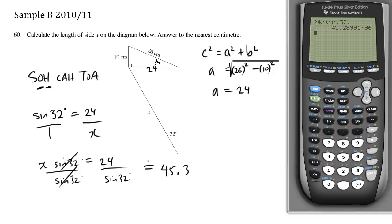Now it says we're talking about centimeters, and the question says to answer to the nearest centimeter for the provincial exam. So we're going to record 45.